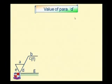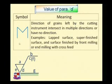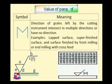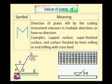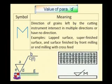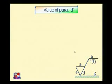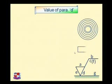If at parameter D, the symbol M or a wavy-M shape is drawn, it means that the direction of grains left by the cutting instrument intersect in multiple directions or have no specific direction — it may be haphazard, moving anywhere over the surface. Examples include lapped surfaces, super-finished surfaces, and surfaces finished by face milling or end milling with cross feed.